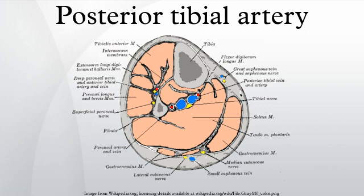Branches: the posterior tibial artery gives rise to the medial plantar artery, lateral plantar artery, and the fibular artery. Often, the branch of the fibular artery is said to rise from the bifurcation of the tibial fibular trunk and the posterior tibial artery. In addition, there is a calcaneal branch to the medial aspect of the calcaneus.